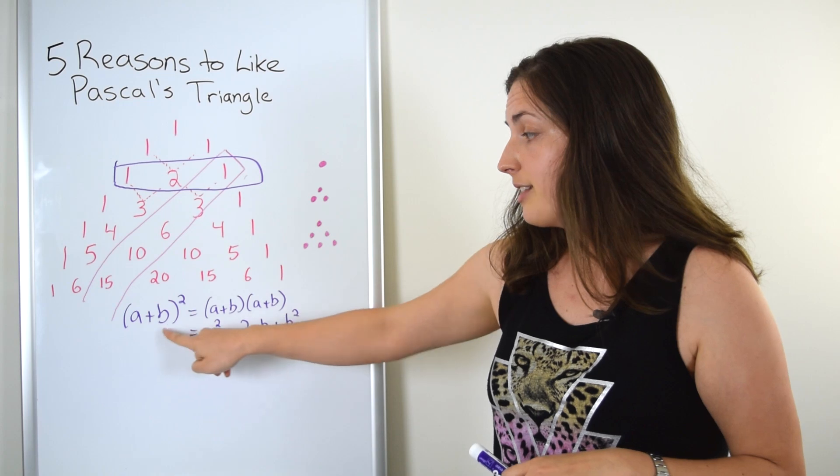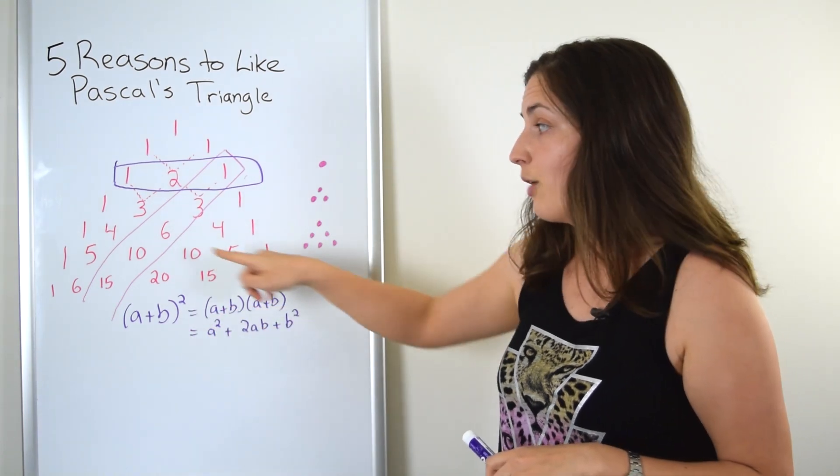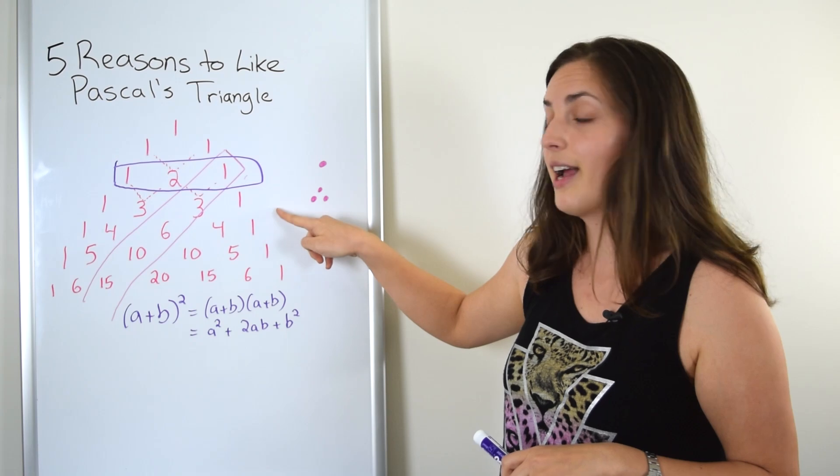This next interesting case is the case here, which you've probably memorized in the past. If you want to take (a+b) to the power of three, the coefficients after expanding will come from this third row of the triangle.